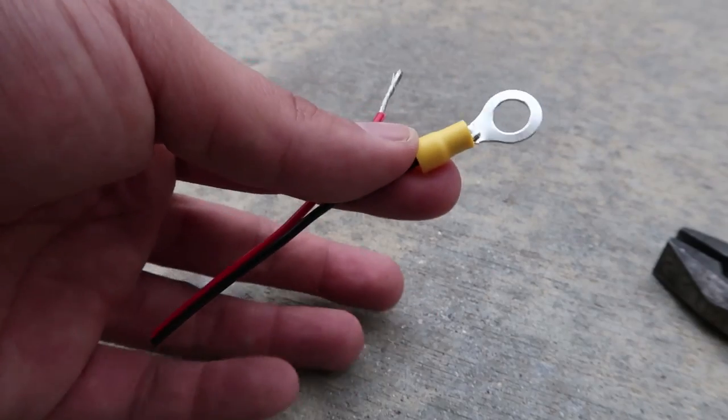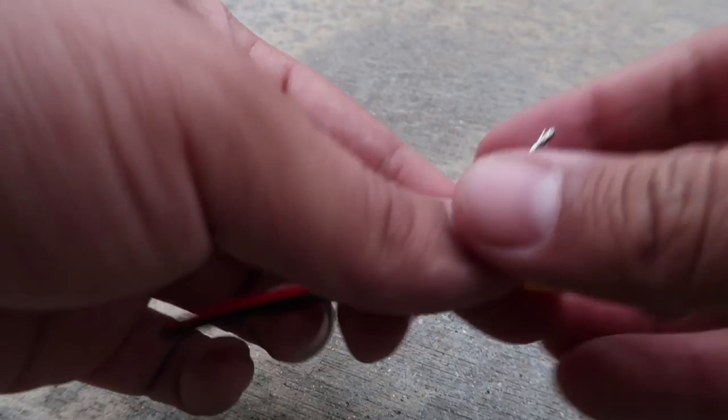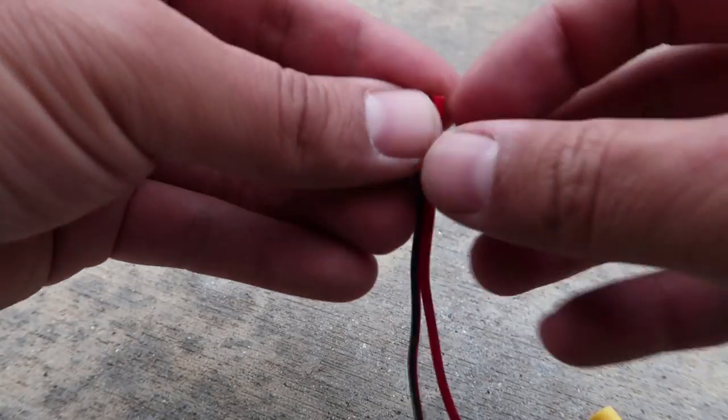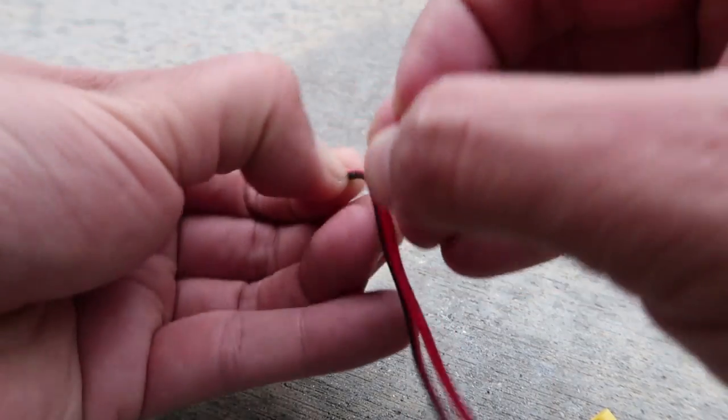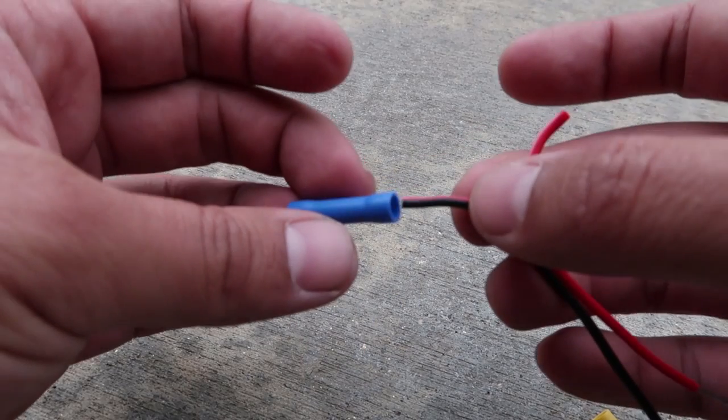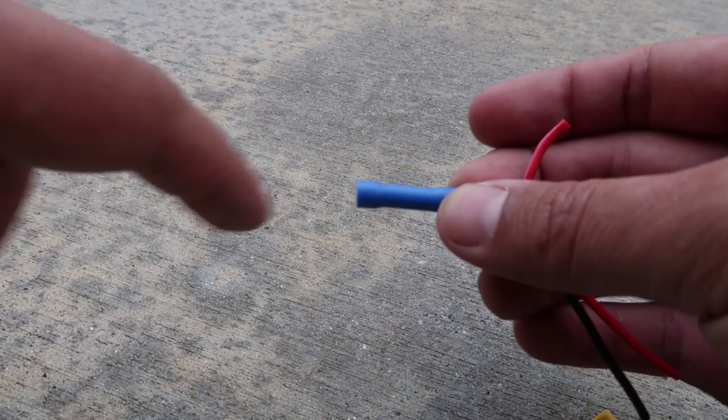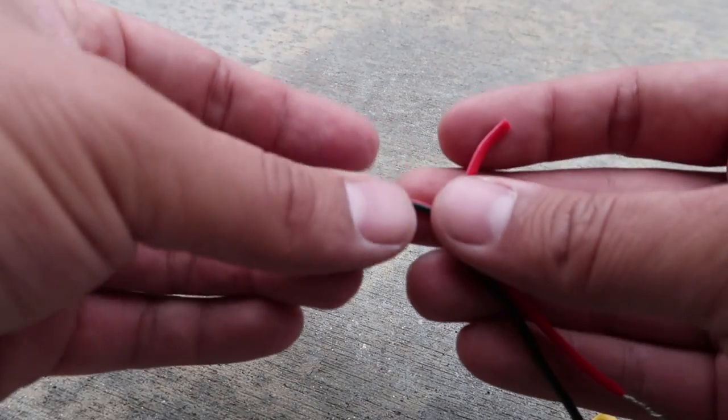This one you get the thicker wire and you're going to crimp this one on there and on the other end, hopefully for a much longer piece, you're going to need to add a secondary wire connector here. And this end will connect to the lights. So this will connect to the negative terminal.